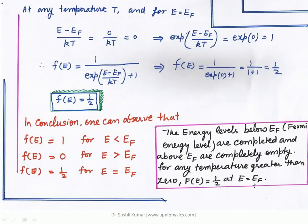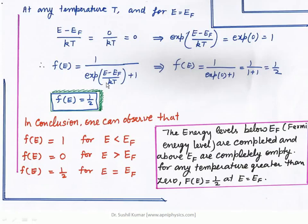If temperature is some value T and the situation is E = EF at any temperature T, the factor (E − EF) / kT = 0. The exponential term becomes 1. So F(E) = 1/(1 + 1) = 1/2 = 0.5. The conclusion: when the metal is at any temperature T and the allowed energy level equals the Fermi energy level, that state will be half filled — the probability of that state being occupied by electrons is one half.